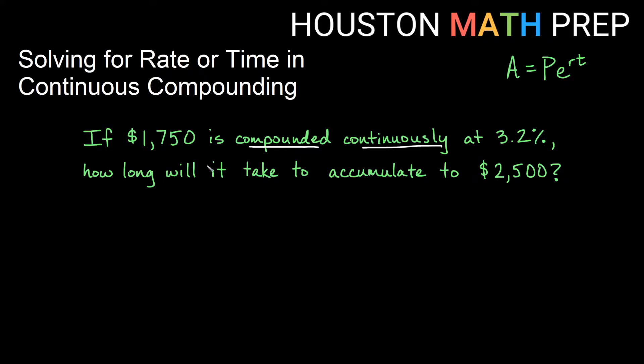Okay, so notice we are starting with $1750. So this is our principle here. We're compounded continuously, so we use this formula. Our rate is 3.2%. Our rate in the formula as a decimal is going to be 0.032. Remember as a decimal we'll always move it over two places. Right here it says how long will it take to accumulate to $2500? So this is our accumulated value, our ending value is $2500. And here it says how long will it take means that we are solving for t.